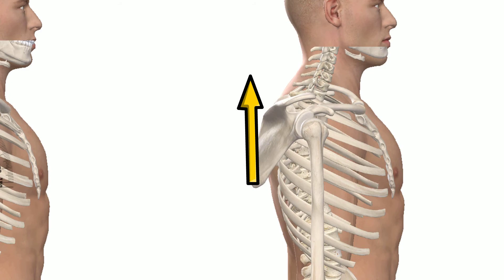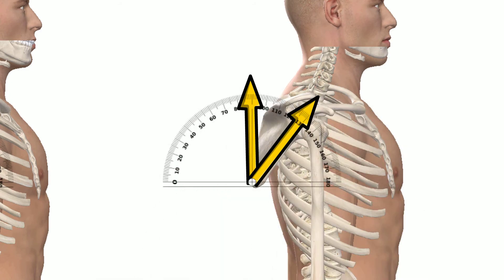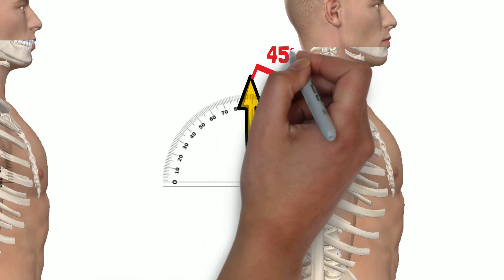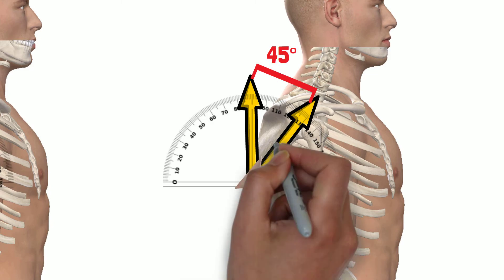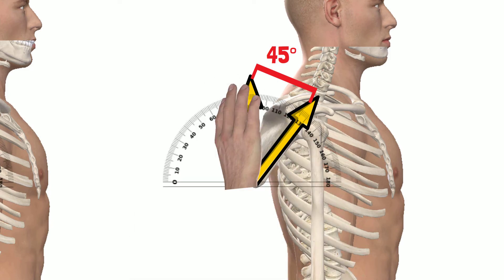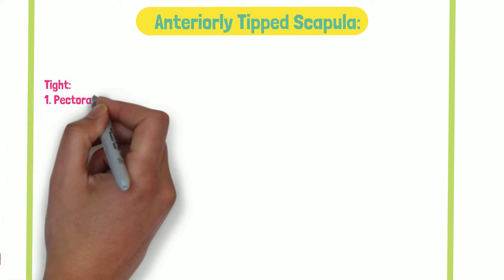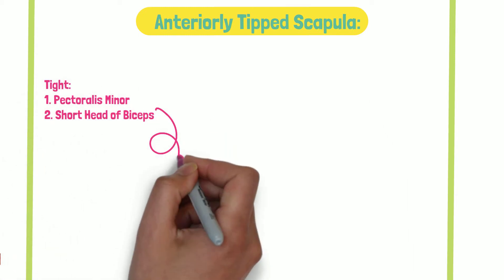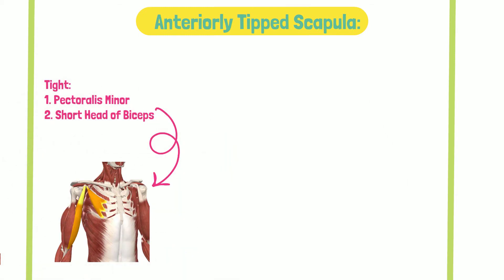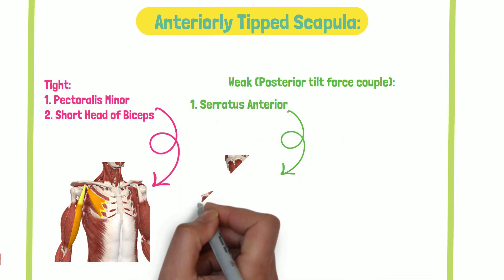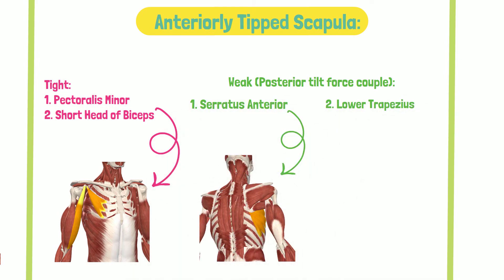Observe an increase in anterior tipping — in this case the scapula is tilted 45 degrees. This can be due to tightness in the pectoralis minor or the short head of biceps. It can also be attributed to weakness in the posterior tilt force couple, such as serratus anterior and lower trapezius.